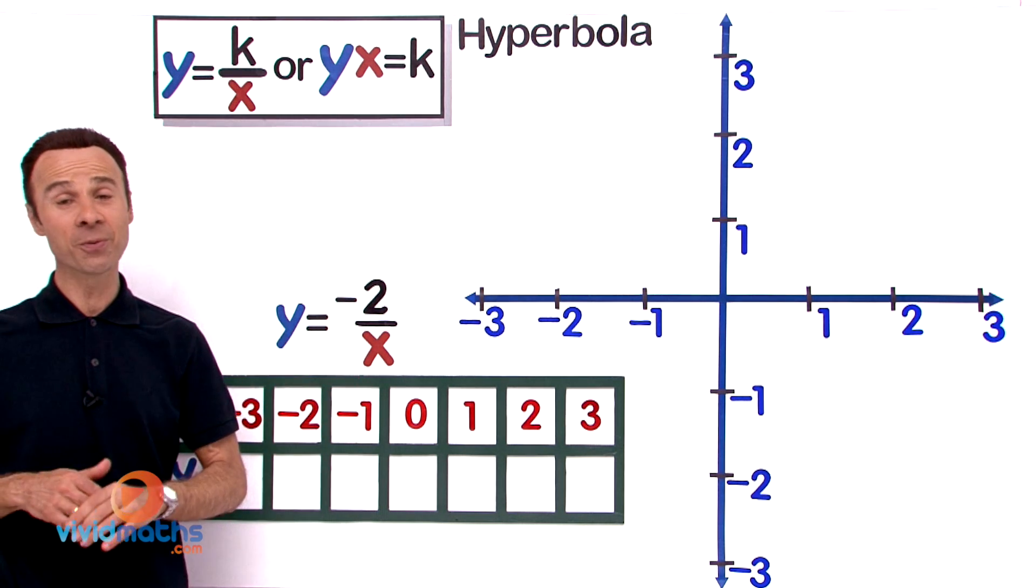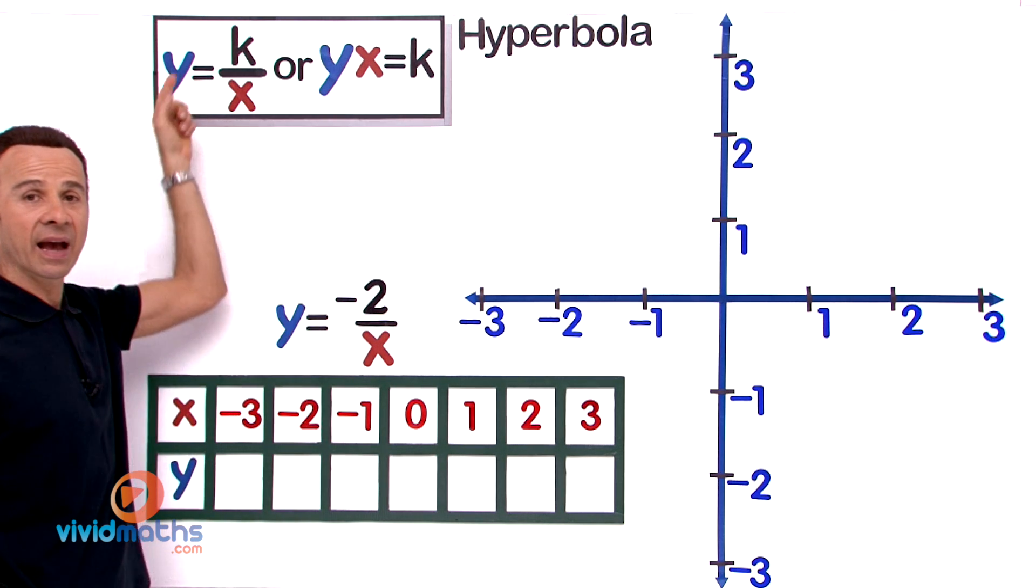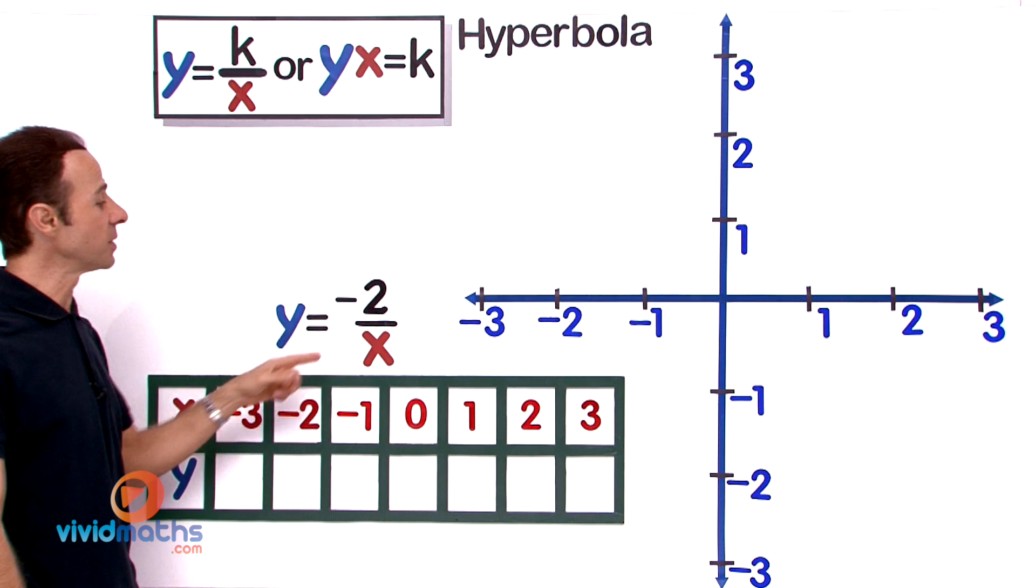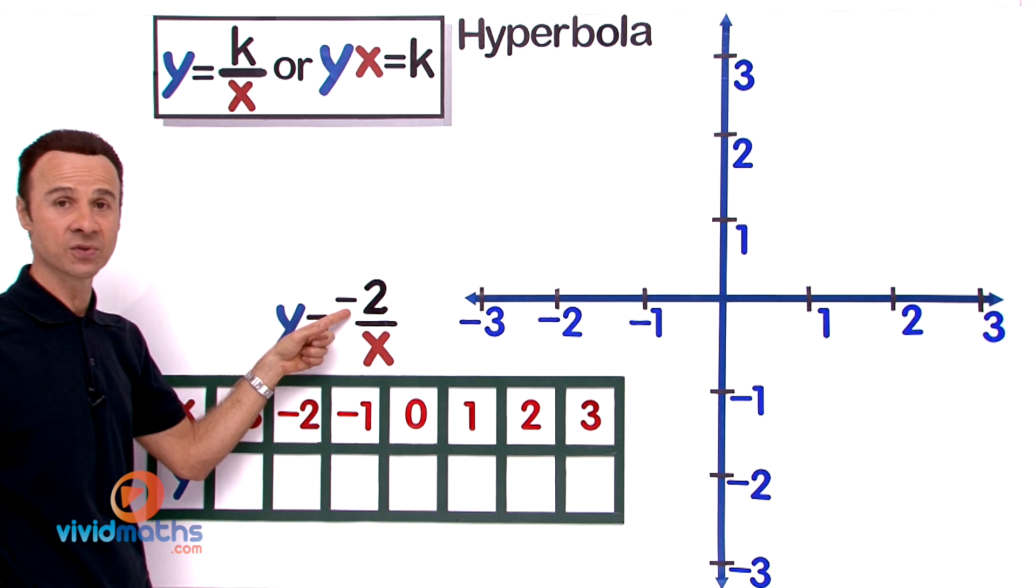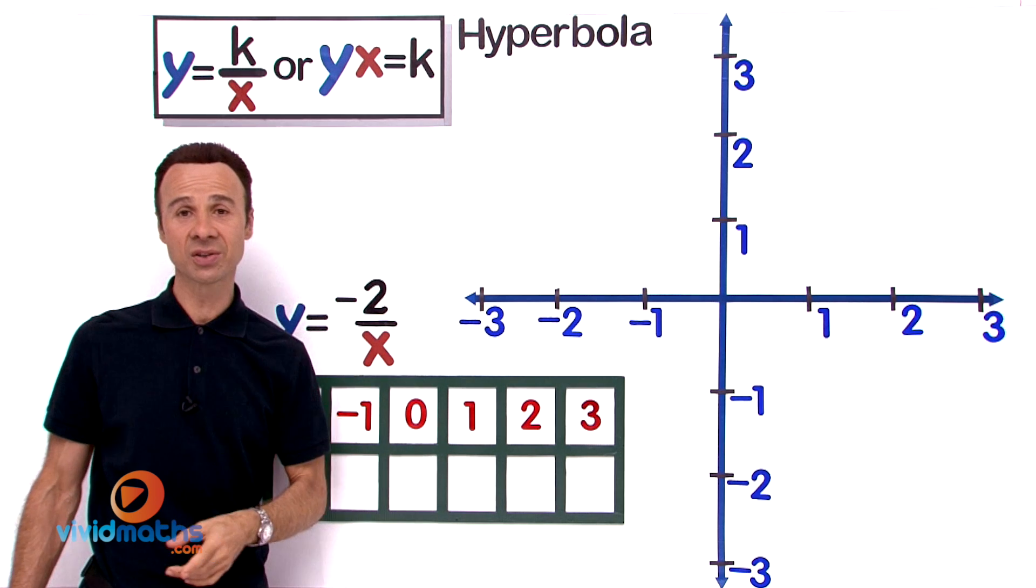Now you may be familiar with the standard formula y equals k over x, where k is a constant. In this particular instance, k is negative 2. Sometimes it can be written as y times x equals k, that constant.